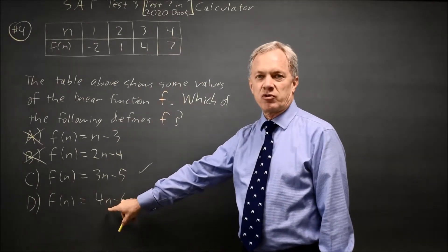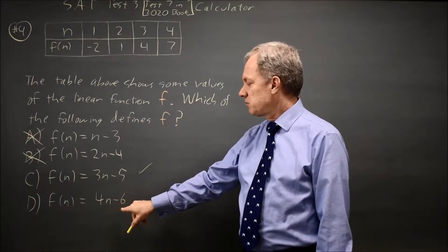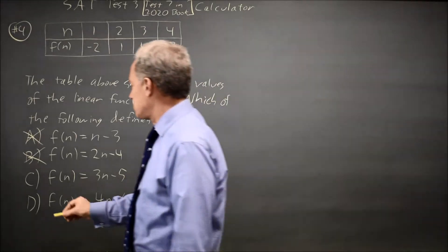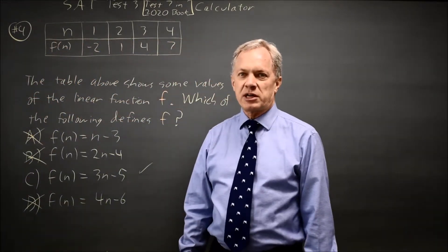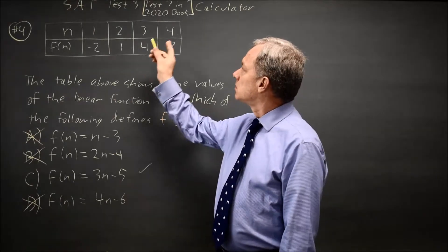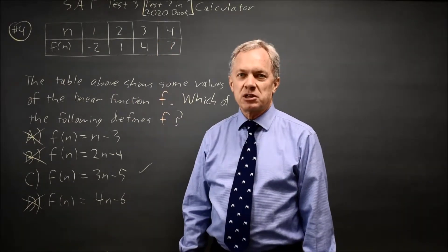4 times 4 would be 4n when n is 4. 16 minus 6 is 10. That's not 7, so D is wrong. C is the only choice that matched n equals 4, so it must be the correct answer.